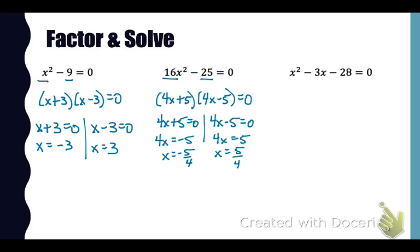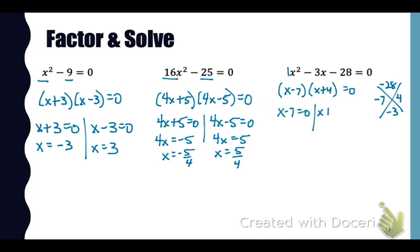Our third problem is the trinomial, so we'll go for trinomial factoring. We're looking for two numbers that multiply to give us a times c, which is negative 28, and combine to give us negative 3. Negative 7 and positive 4 will do that. Since our a value is 1, we can go right to our set of parentheses and write those factors as x minus 7 times x plus 4. Setting them each equal to 0, our solutions are 7 and negative 4.